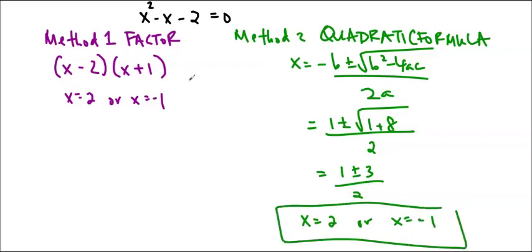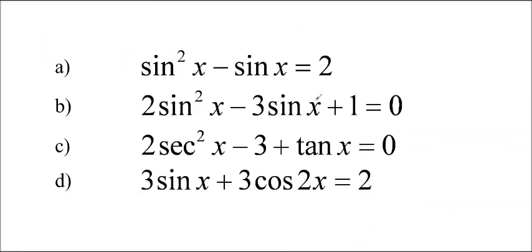So you should get the same answer using either method. Of course, the third method is to complete the square and then isolate x, but that takes longer and it's not worth it. So we're not going to be doing it that way today. So we're going to solve these four questions and we'll be done. So you can see that this first one, a, is just like the other one except for instead of x, I've got sin x.